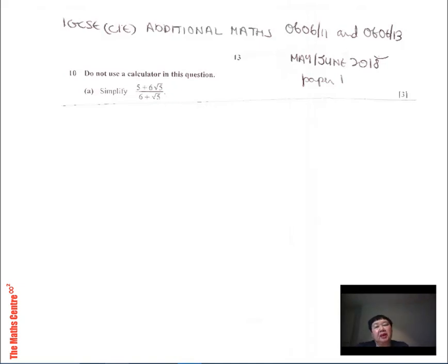Hi, welcome to the med center. This is an exam question taken from the most recent summer 2018, Paper 1 of the IGCSE Additional Maths code 0606/11, which is the same as 0606/13. This is a 3 mark question, very short. This is question number 10 and involves rationalizing.